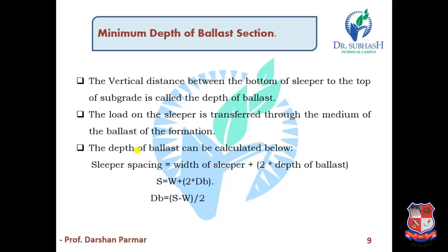Now, the minimum depth of ballast section. The vertical distance between the bottom of the sleeper and the top of the subgrade is called the depth of ballast. The load on the sleeper is transferred through the medium of ballast to the formation. The depth of ballast can be calculated as: sleeper spacing S = W + 2 × depth of ballast (db), so db = (S − W) / 2.